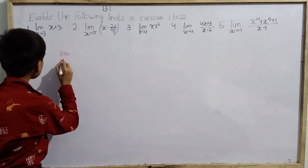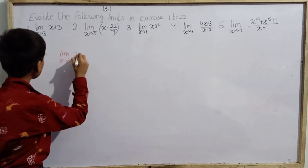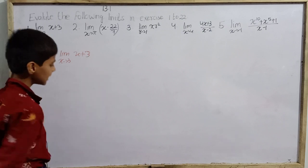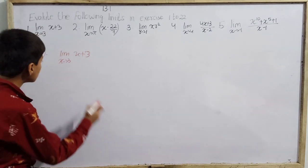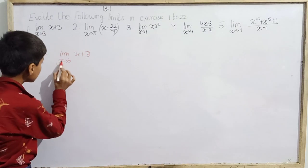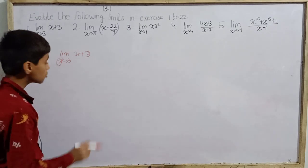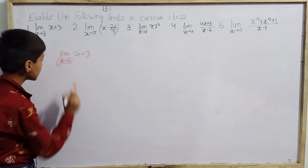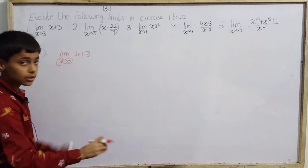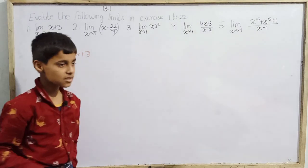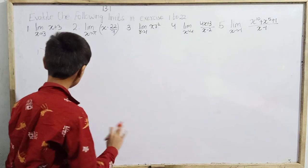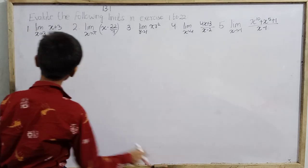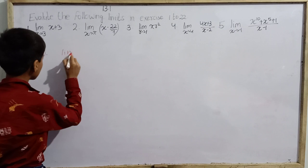So what do we do in the limit? Here the variable is given — wherever it tends to, we just put that value and solve it. It is really very easy, and very useful in physics.